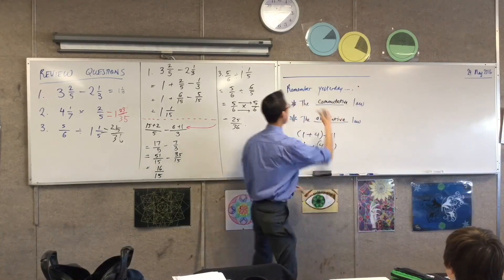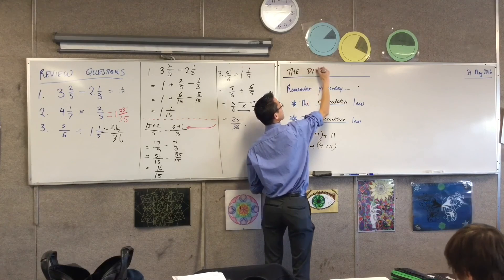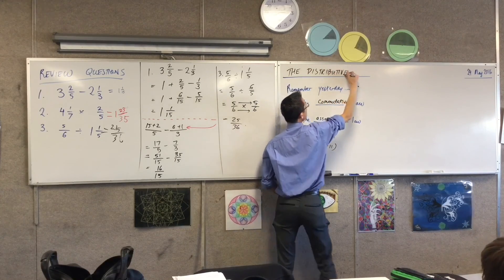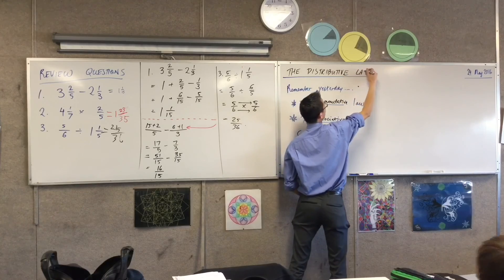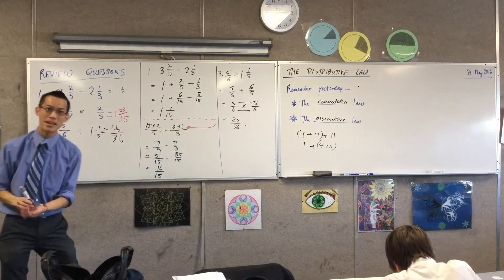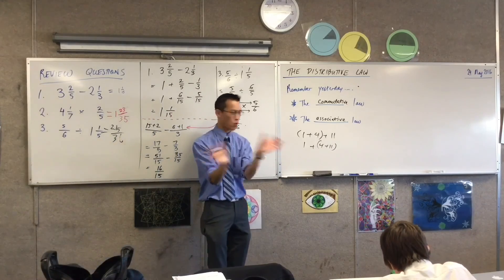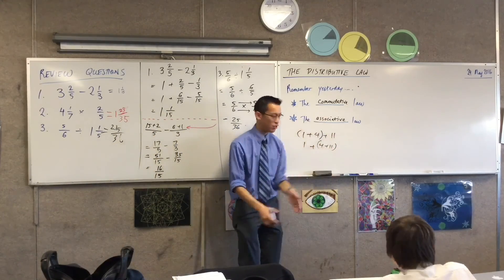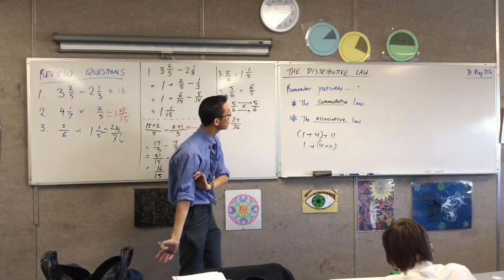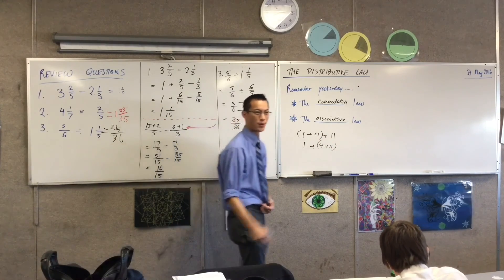It's got a bit of a fancy name, so this is a heading: the distributive law. Commutative means that the numbers can commute — they can rearrange and swap places. Associative means you can group, you can associate different pairs of numbers. What does the distributive law mean?